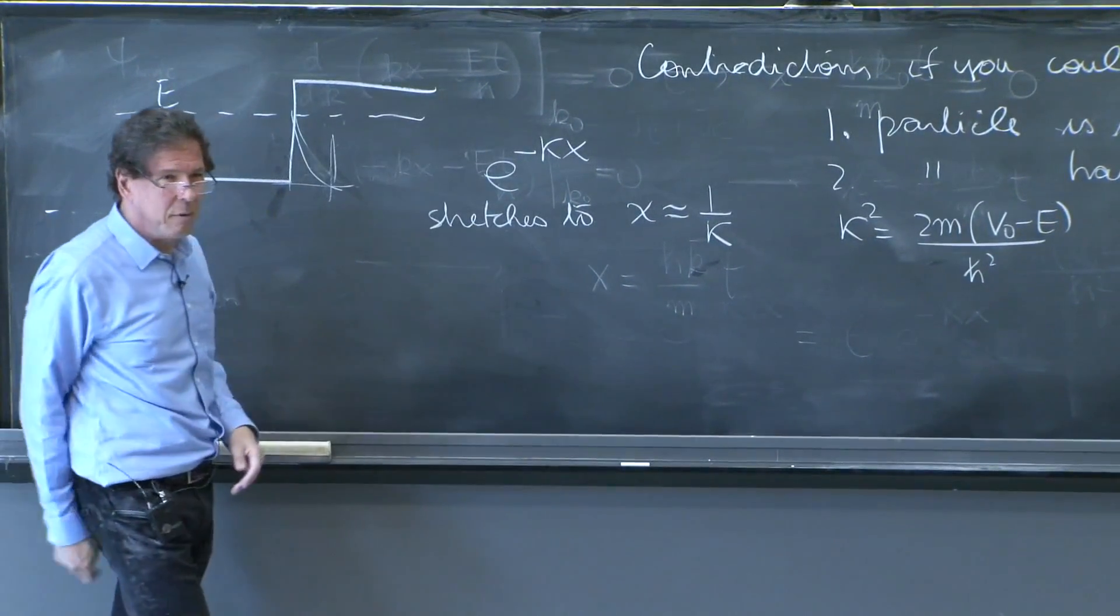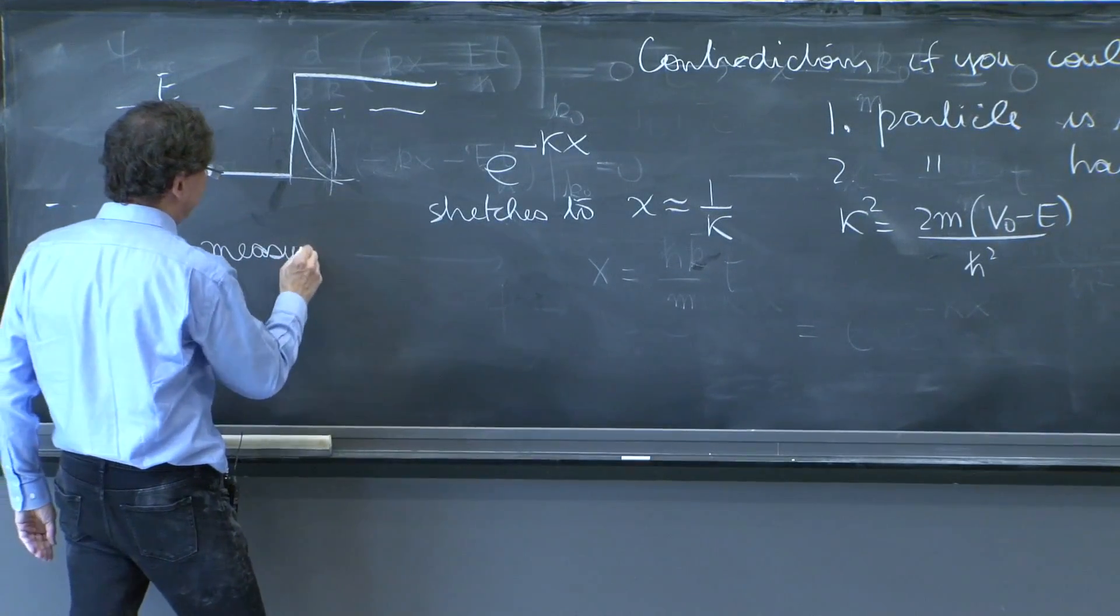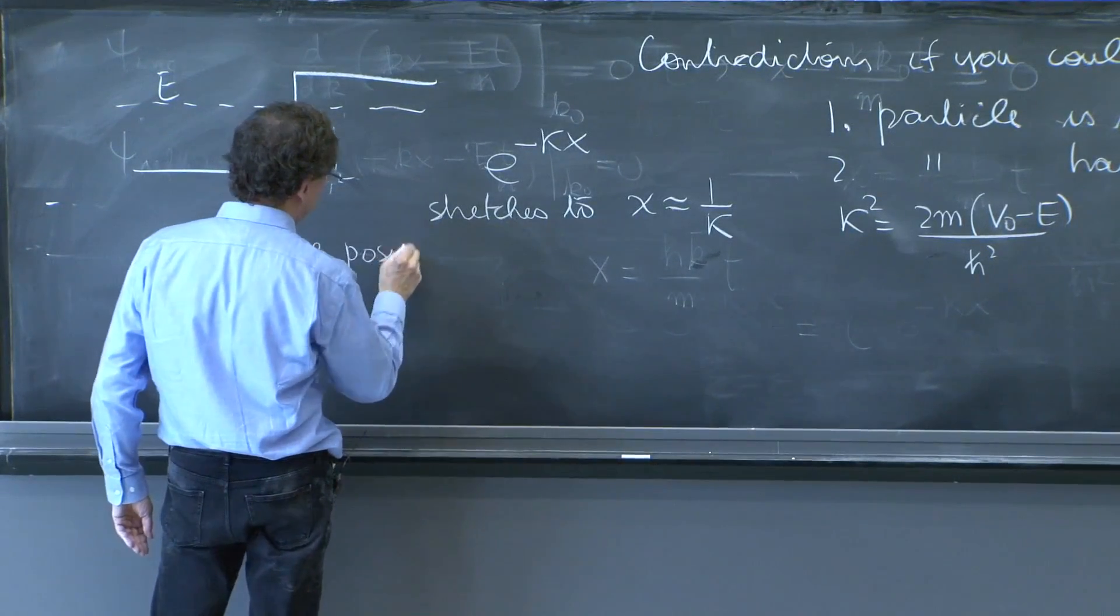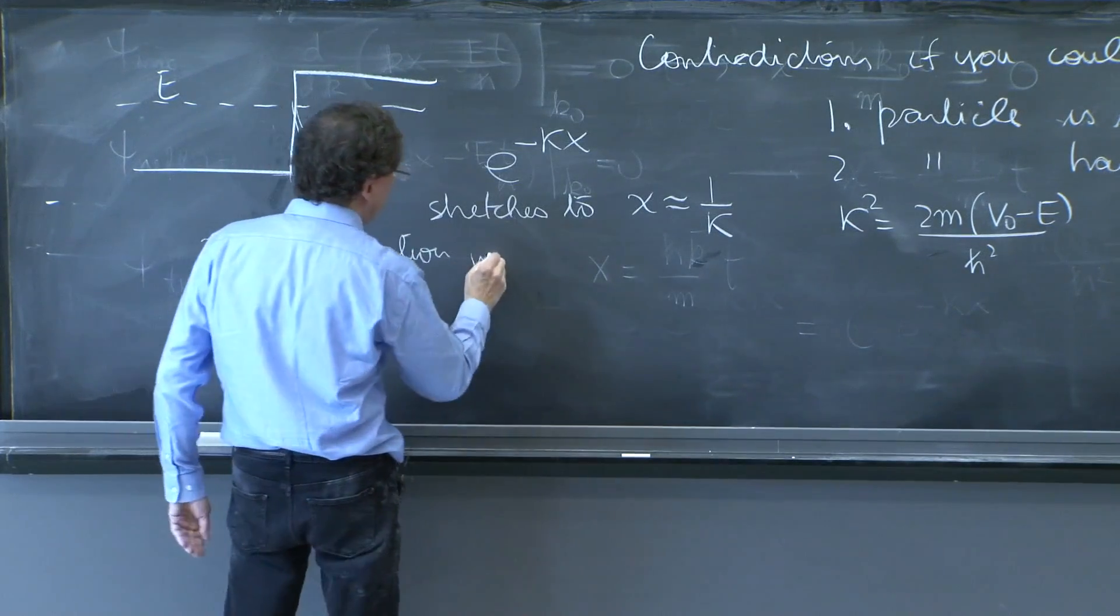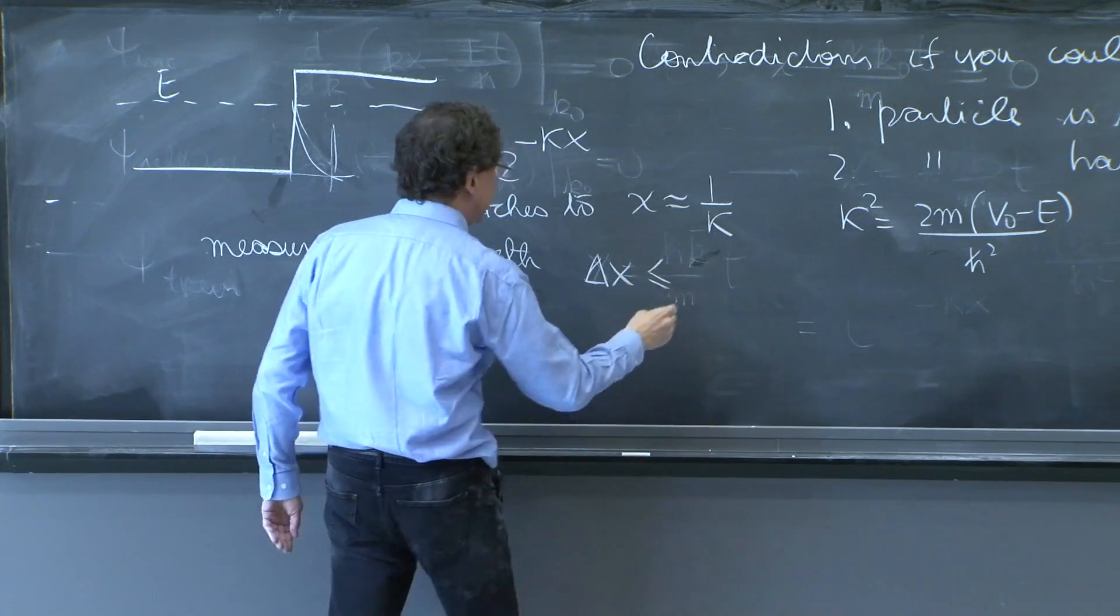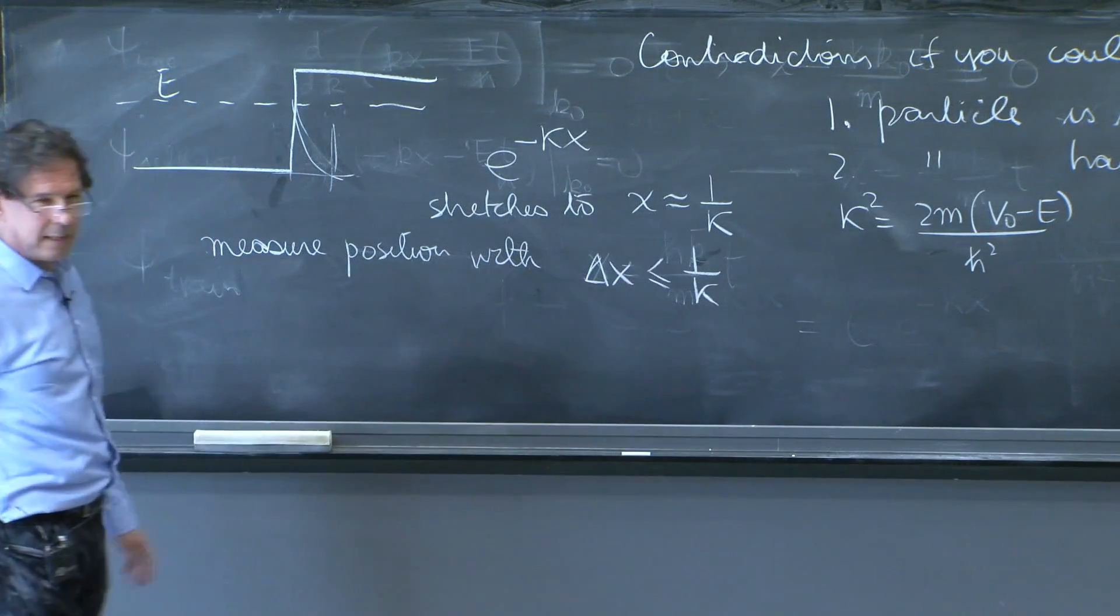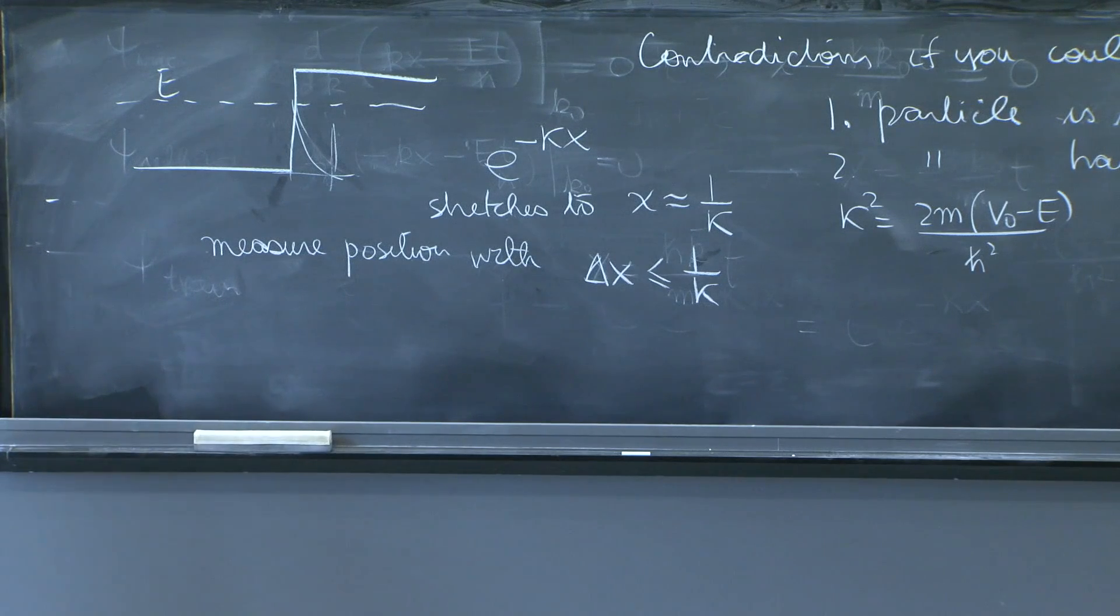So you need to measure position with Δx a little smaller than 1/κ. Otherwise, you cannot really tell it's inside the forbidden region.